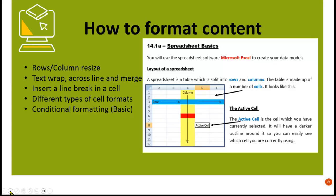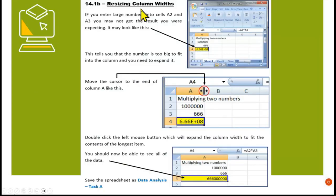Where your cursor is would be the active cell. If we need to resize the column width, we hover between the two columns — there's a line there and your cursor will change to a double-sided arrow. Then you can just pull it to the right or whichever way you want to change the size.